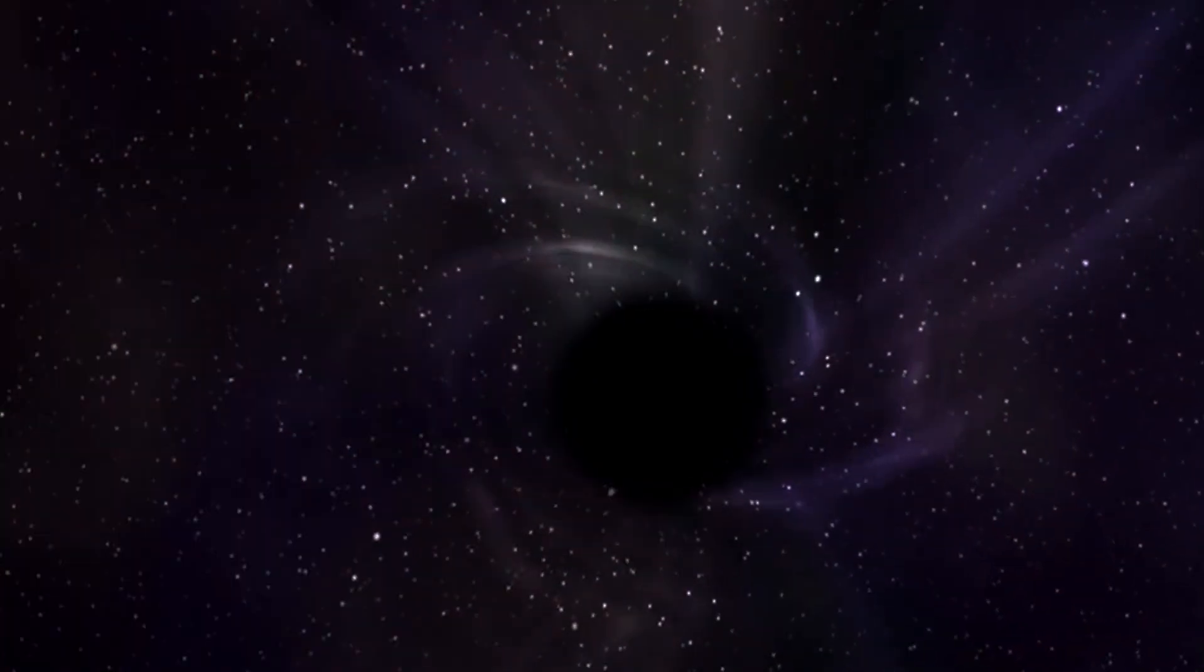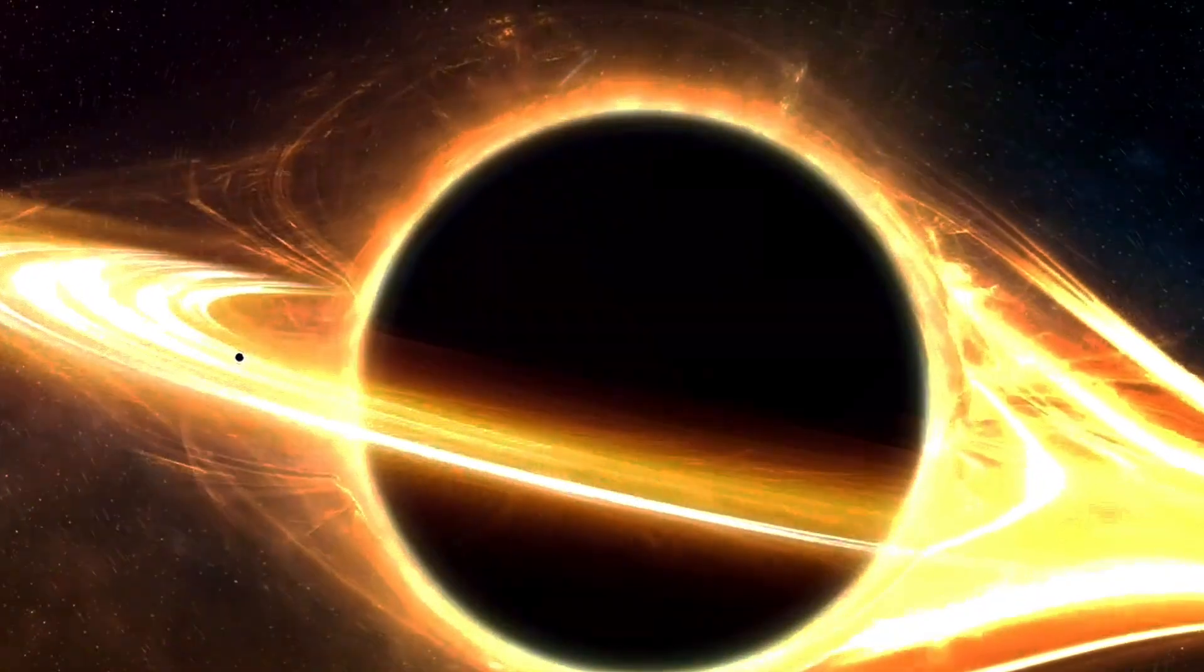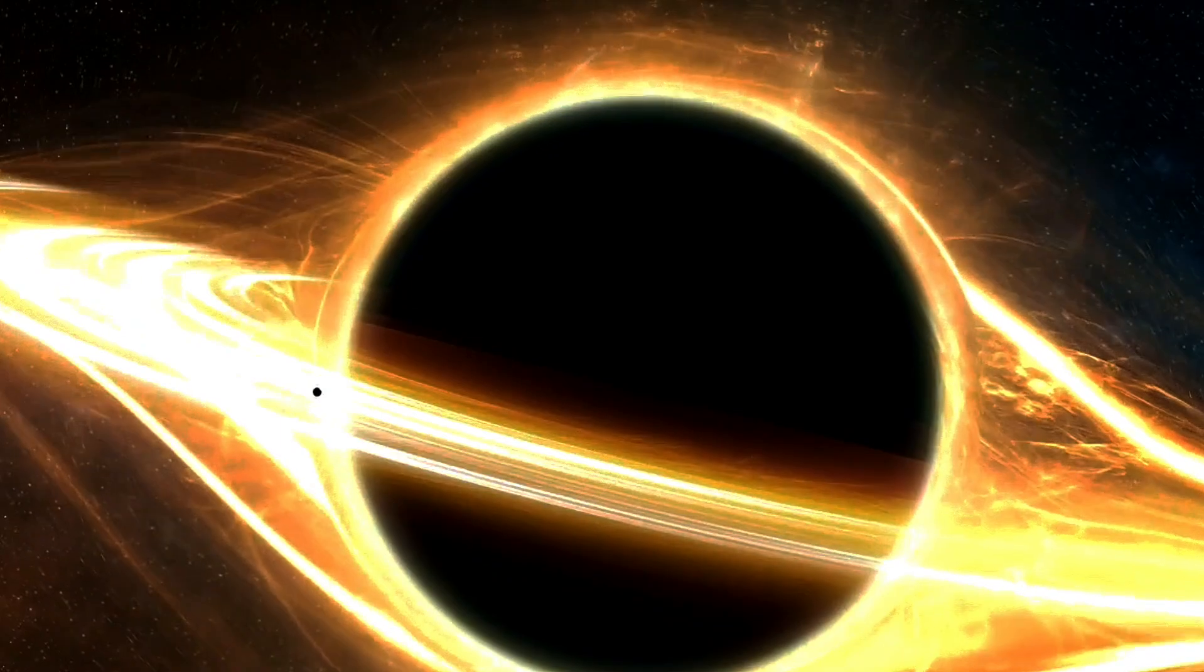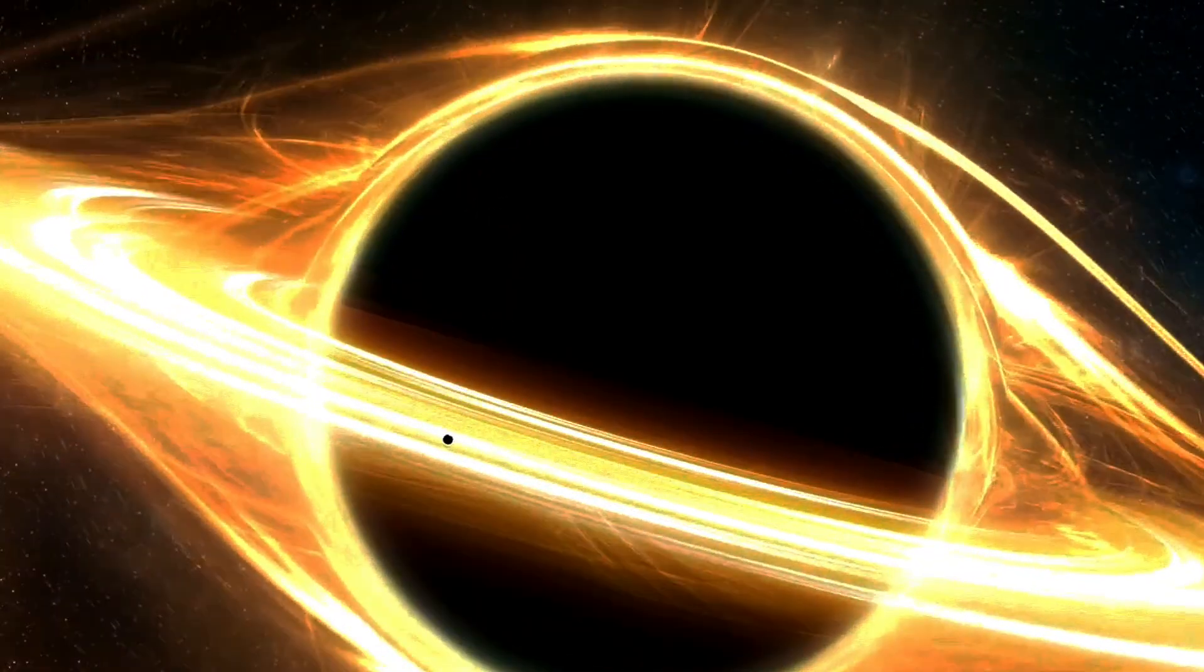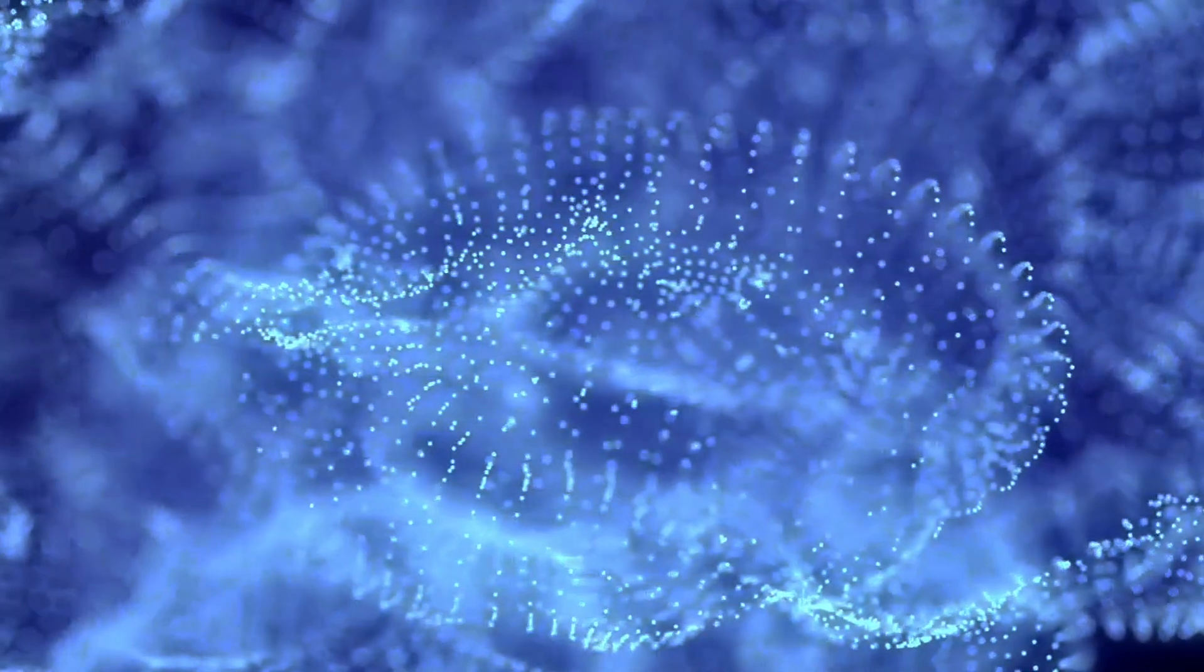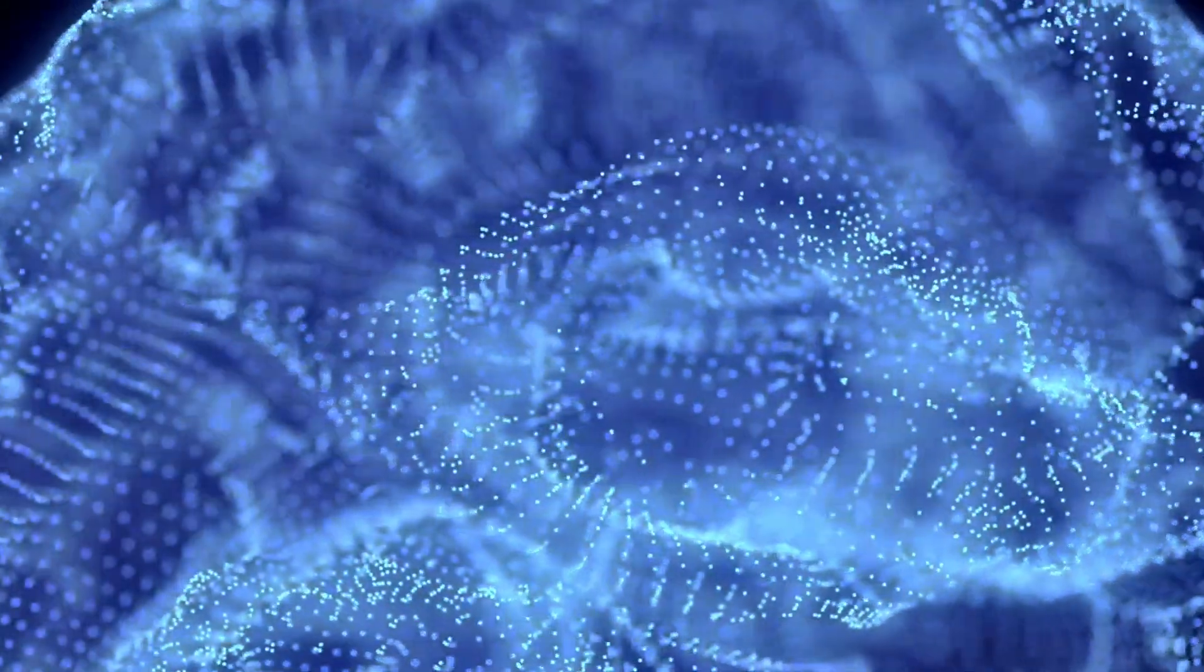Think about a black hole. All the objects falling into it might have their information encoded on the surface fluctuations of the event horizon, the boundary of the black hole. This idea helps resolve the black hole information paradox within string theory.